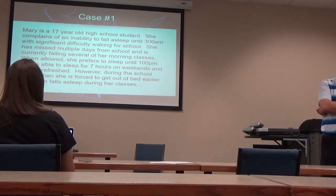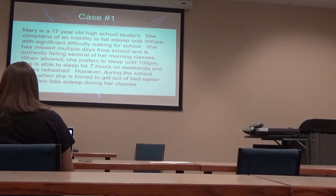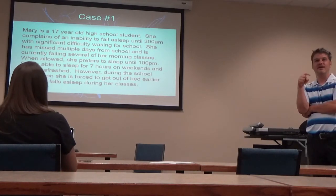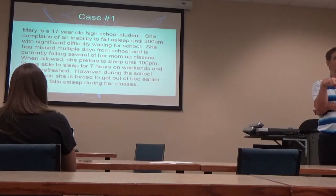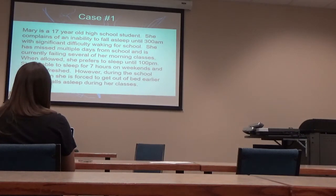This is the classic teenage brain — I prefer to go to bed between midnight and 2 a.m. and get up between 10 and noon. As the brain develops, this is normal. It becomes abnormal when it affects our academic, social, or workplace function or our relationships.